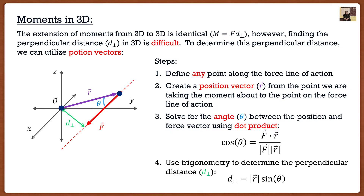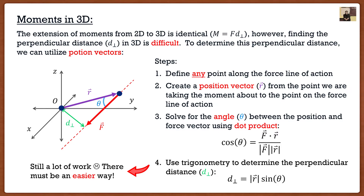Now, this approach is a lot of work and inconvenient. More importantly, think of the results — at the end we have a force times a distance, so we just get a number like 100, and that number doesn't tell us anything. In two dimensions it was nice because if we're in the XY plane, all our moments are about the Z-axis. But in three dimensions, we get a number and we don't know if it's about the X-axis, Y-axis, Z-axis, or anything. So we actually have to find a better way to determine moments where we can figure out moment components — the moment about the X-axis, the Y-axis, and the Z-axis.